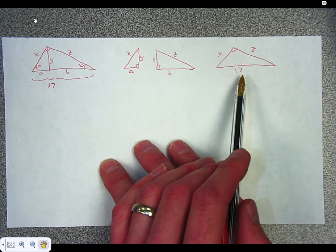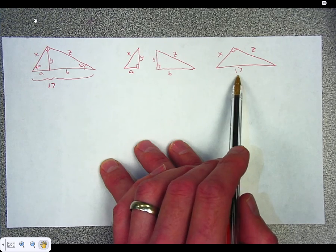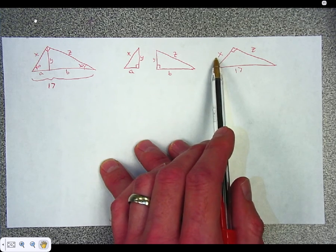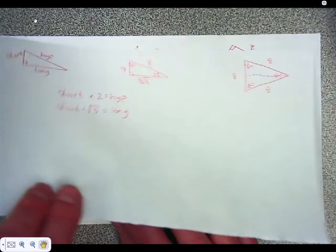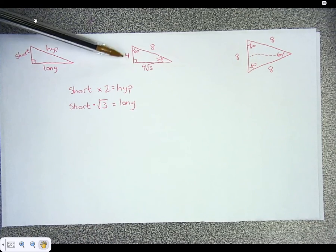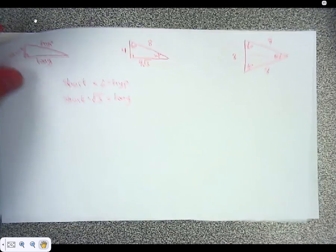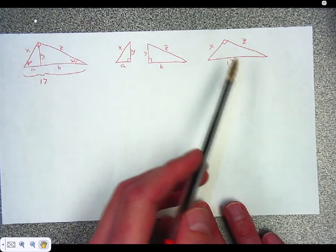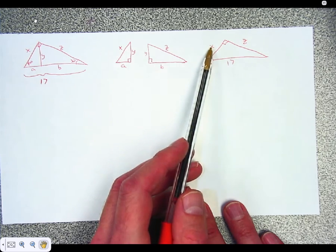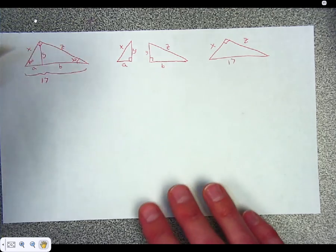I only know about this side right now, so this is the triangle I'm going to focus on. This is the hypotenuse. X is the short side. Going back to my original notes here, the short side is always half of what the hypotenuse is. I know the hypotenuse is 17. X is going to have to be half of 17.